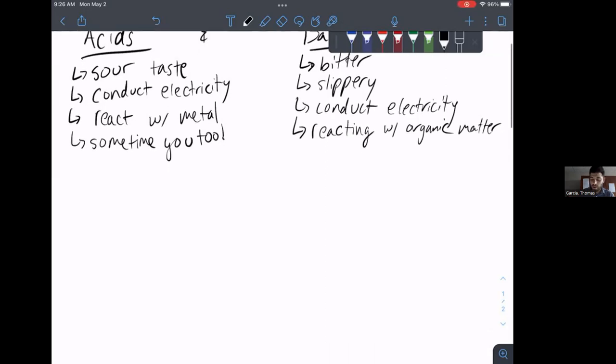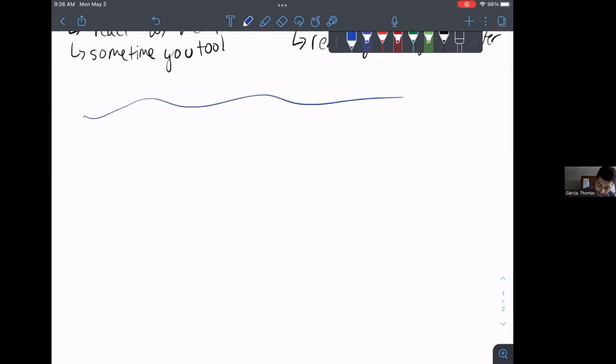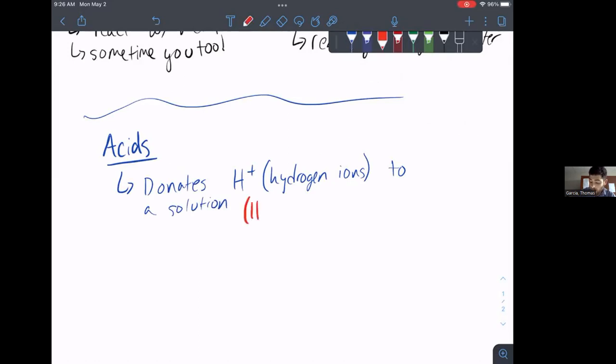So without further ado, we're going to actually start off with acids. Now, there's certainly different types of acids we think of. Bronsted-Lowry, Lewis acids, whatever. Arrhenius, you may want to use different definitions of acids. But for the purpose of our class, we're going to think of acids as something that donates hydrogen ions to a solution. So when you have a solution of an acid, you have a lot of hydrogen ions.